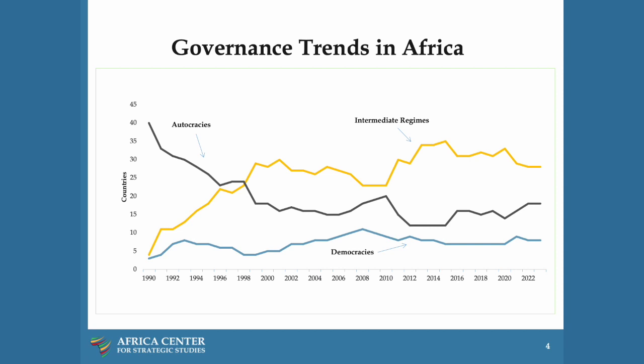Moreover, and importantly, there was a decline in the number of conflicts. There were 18 countries in conflict in the early 1990s. By 2010, that had dropped to seven. So there were many positive trends.